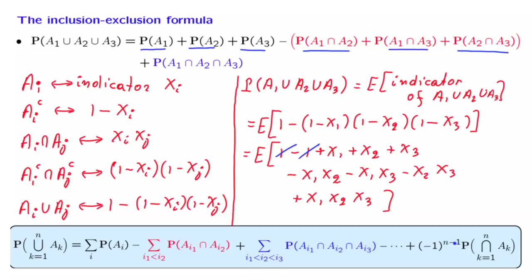The exponent of n minus 1 ensures the last term has the correct sign. For example, if n equals 3, the exponent is 2, giving a plus sign, which is consistent with what we derived. This formula is quite useful when calculating probabilities of unions of events, and the derivation using indicator functions is quite beautiful.